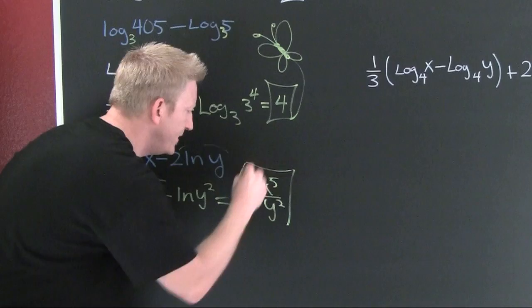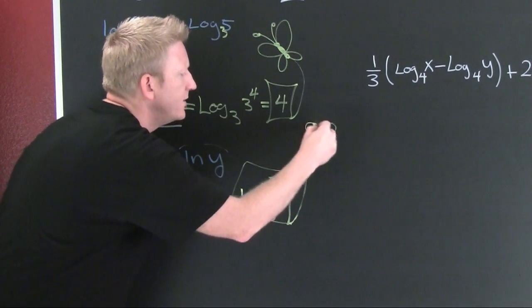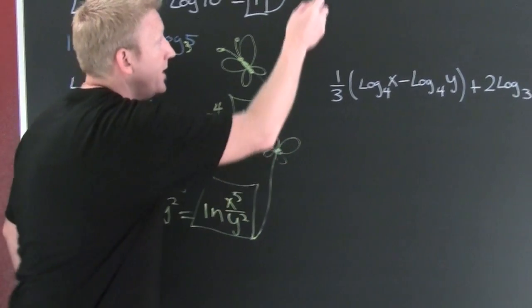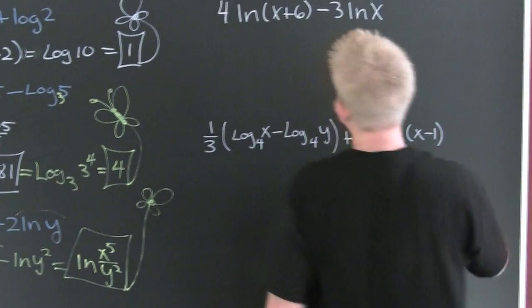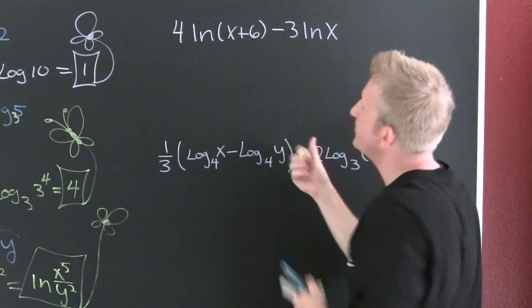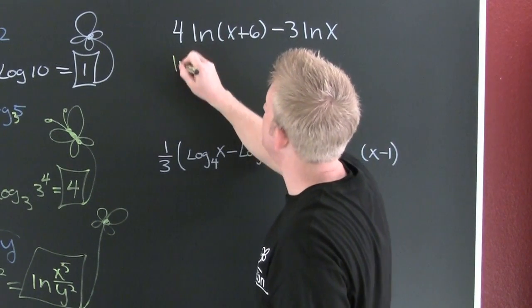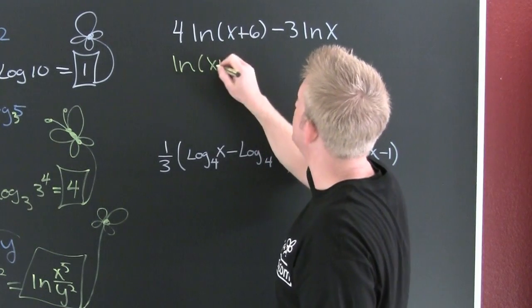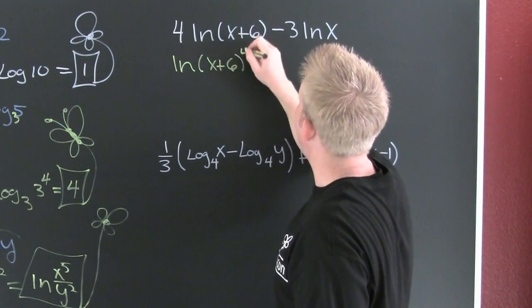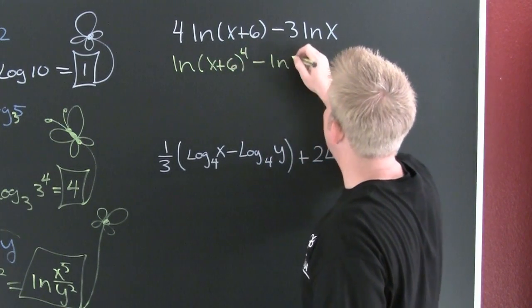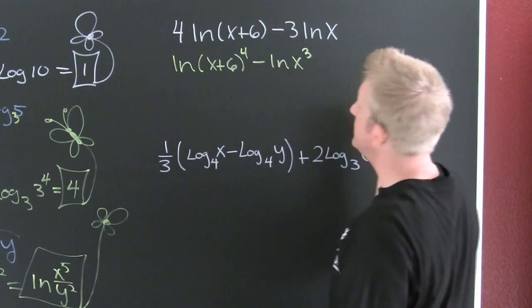And then you're onto a tough one. Here we see we don't have them isolated so we can bring them up. So then this is the natural log of x plus six to the fourth minus the natural log of x to the third.